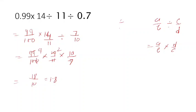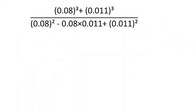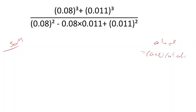You have to practice about DHS. The next question is 0.08 cube plus 0.011 cube divided by something. To solve this, use the formula a³ + b³ = (a + b)(a² − ab + b²). Here 0.08 is a and 0.011 is b, so this formula applies.